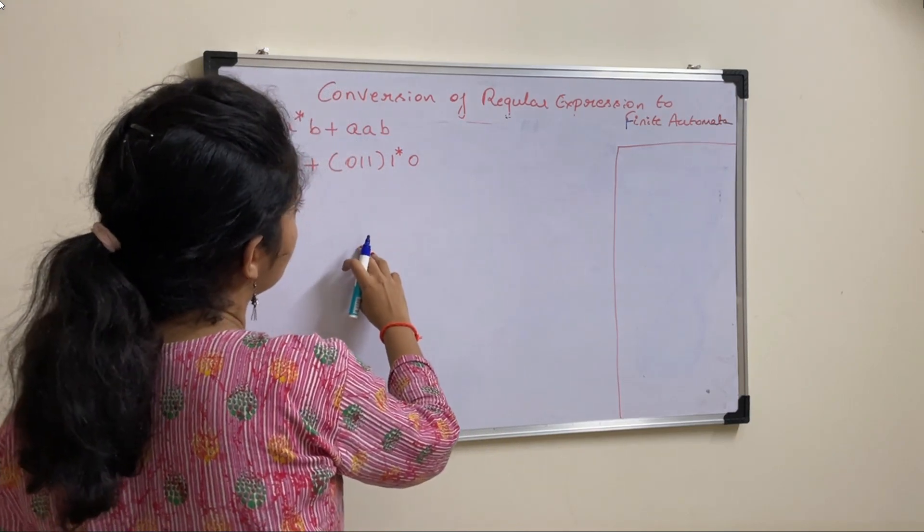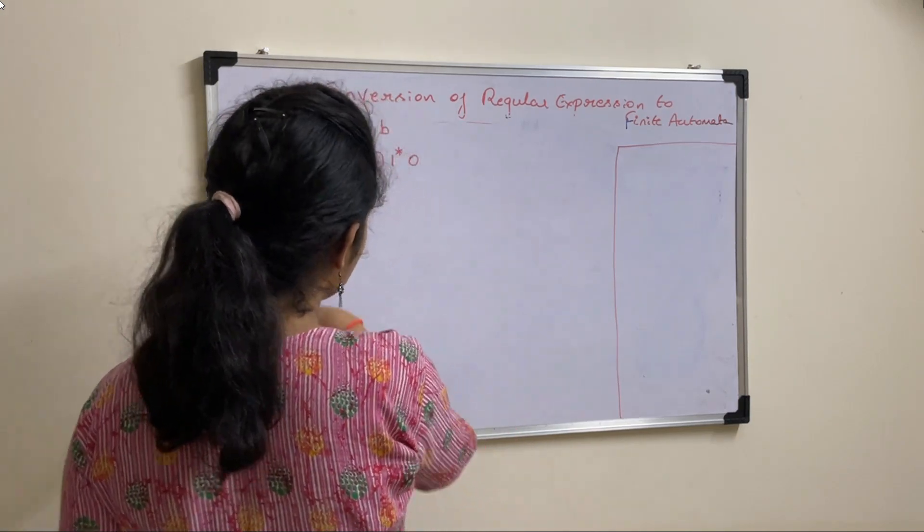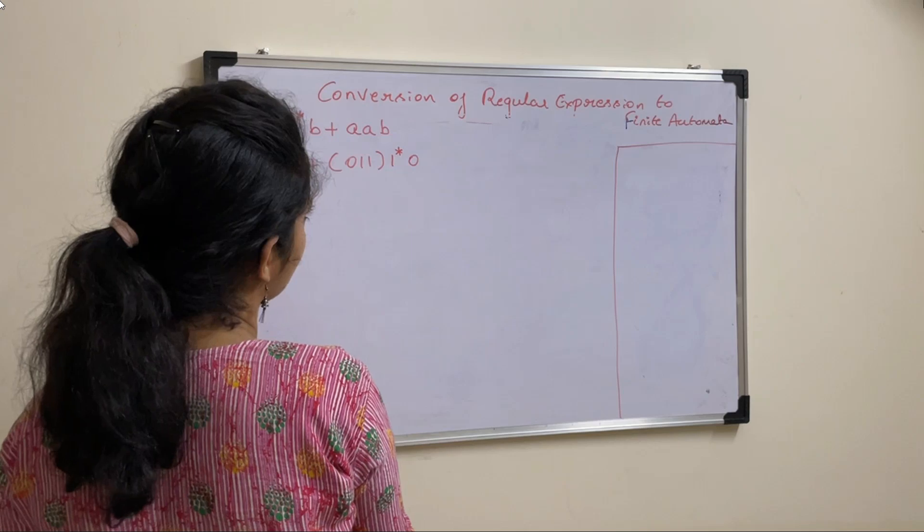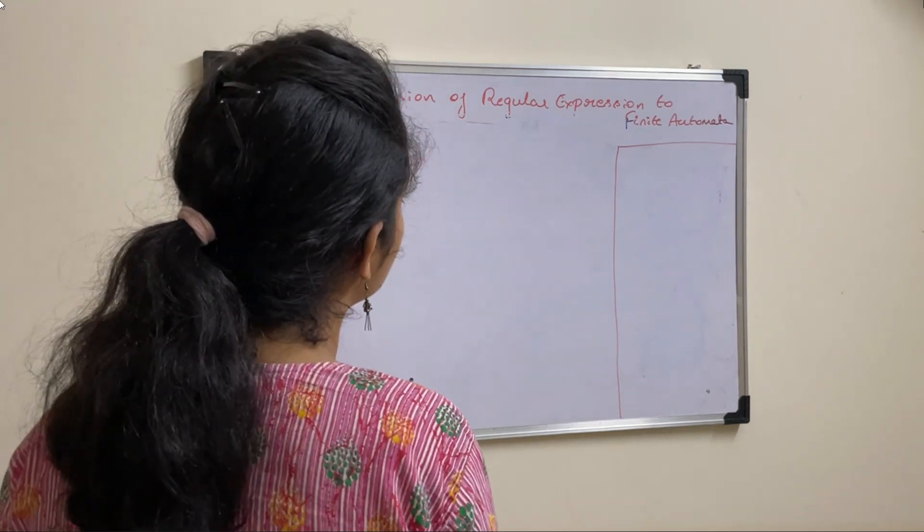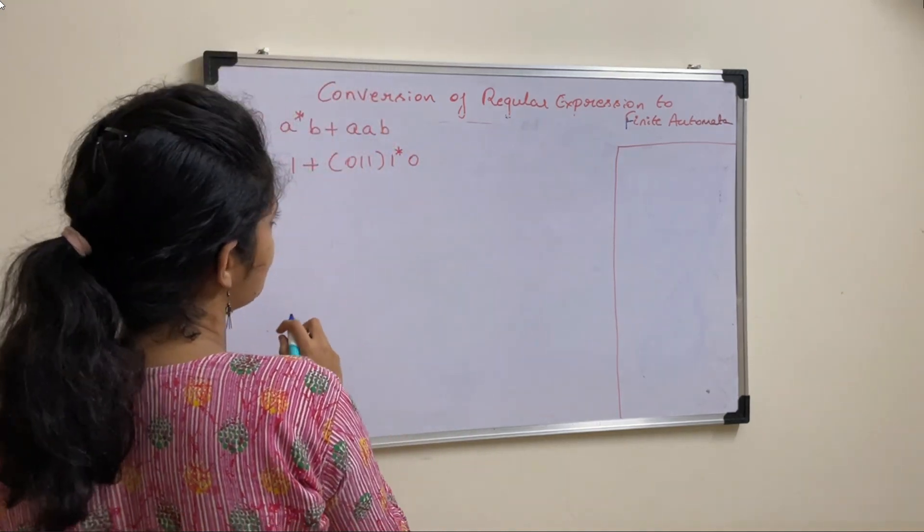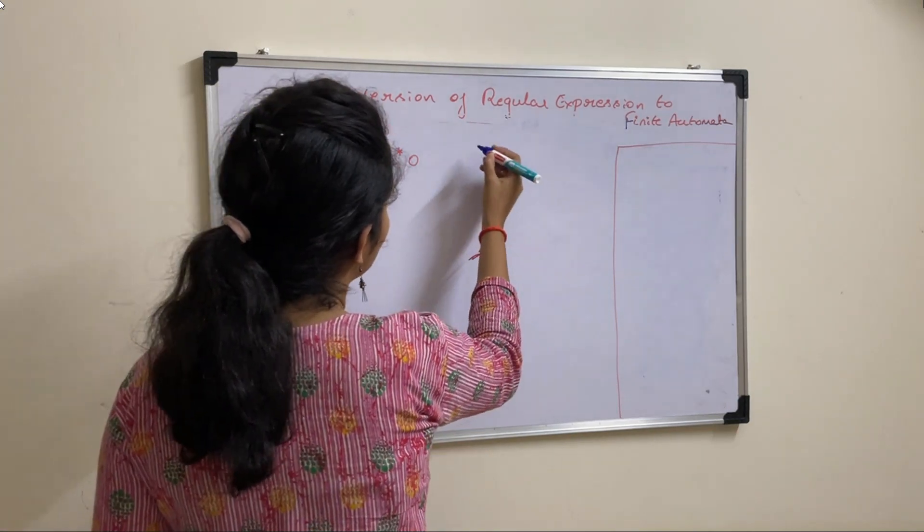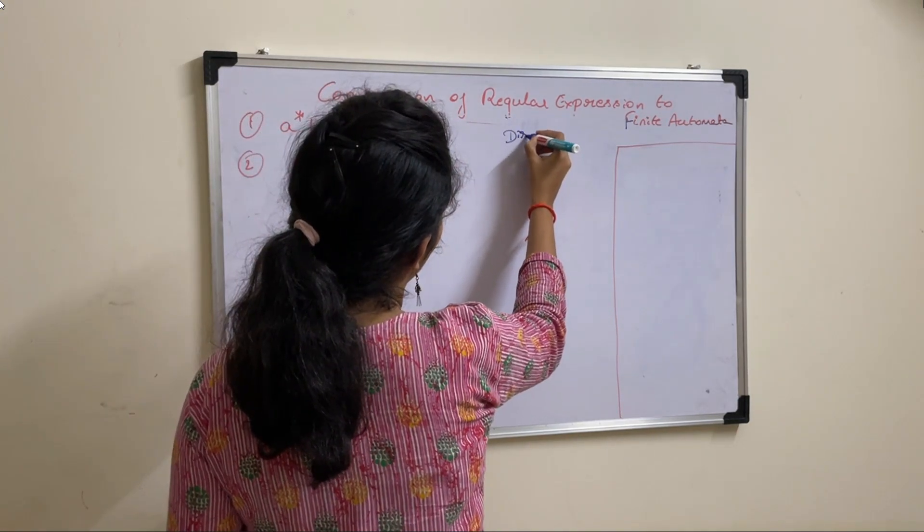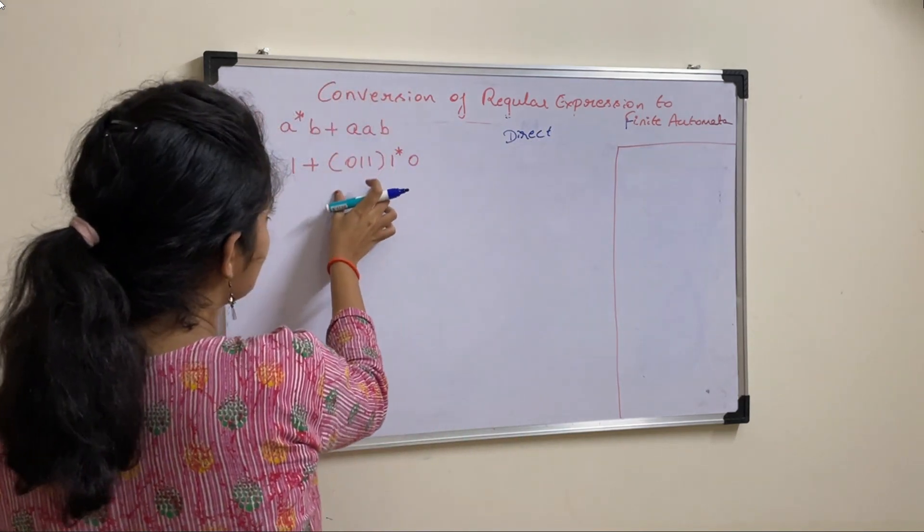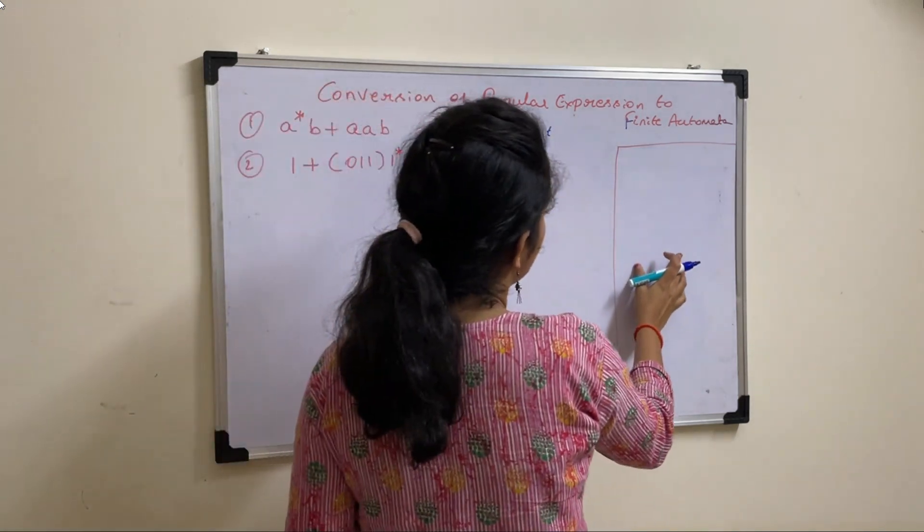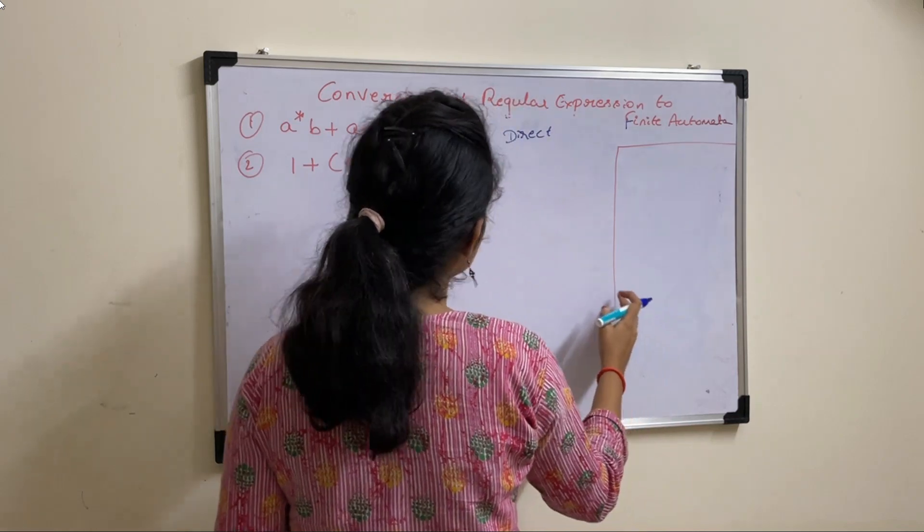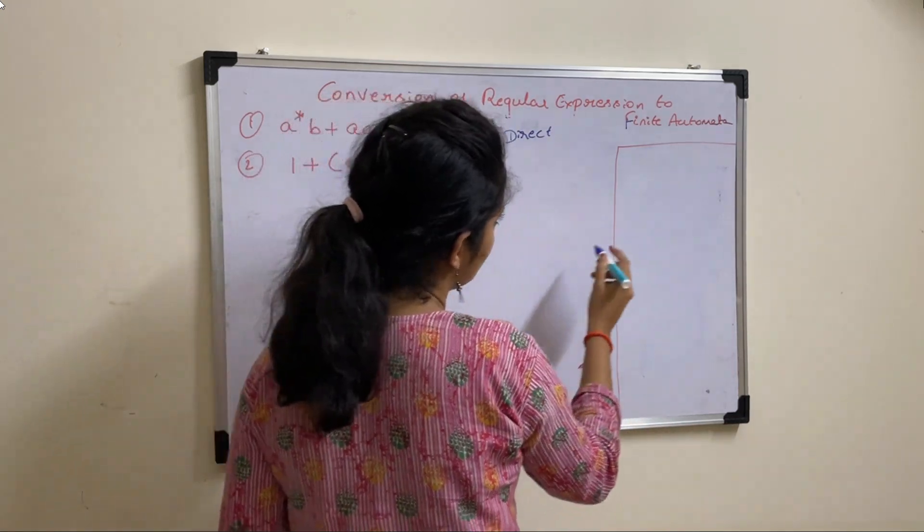In our previous video, we saw how to convert the given regular expression to finite automata using subset method. I told you we have two methods for conversion, one is subset method and second one is the direct method. In this video, we will see how to apply direct method for this conversion. Before solving these two equations, let us know some of the notations which are required for solving these equations.